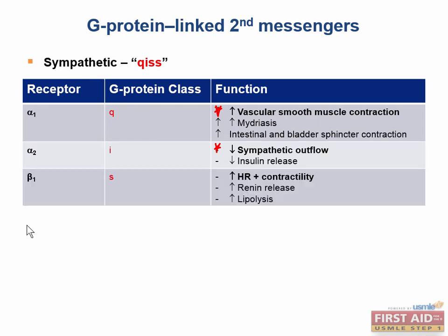The beta-1 receptor is of the G-sub-S class, and it acts to increase heart rate and increase heart contractility — that's its big function. It also increases renin release and increases lipolysis. When you think of beta-1 receptors, think sympathetic stimulation of the heart.